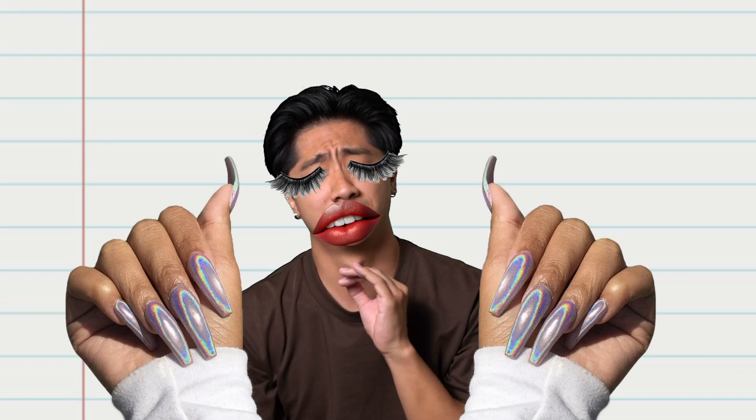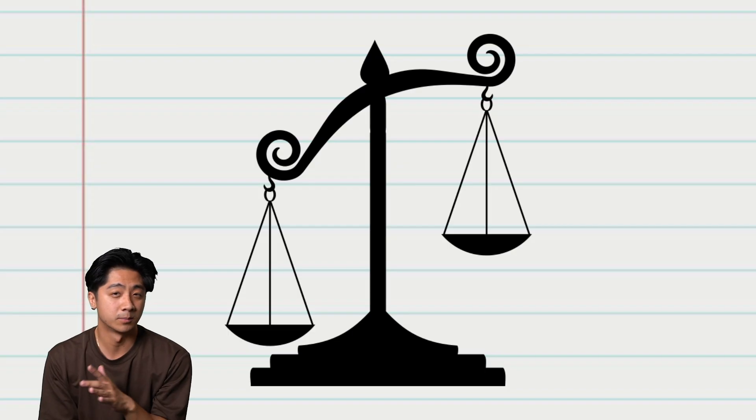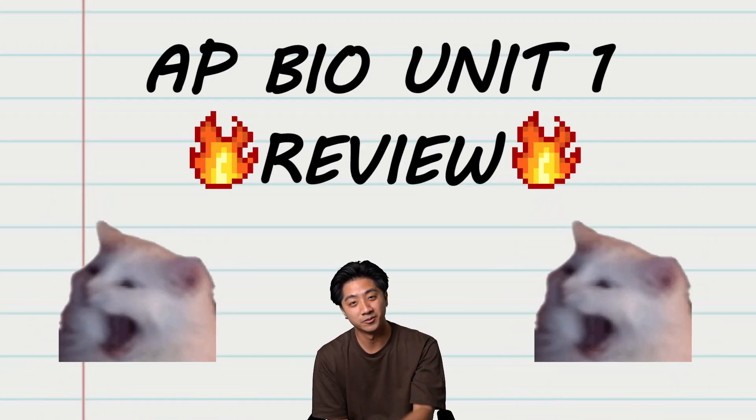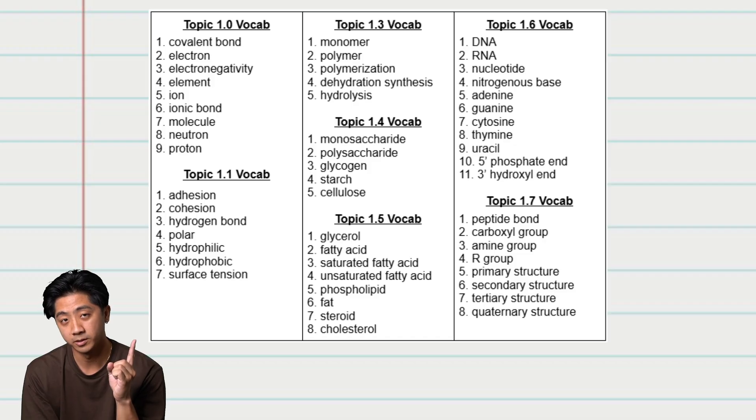Unit 1, the chemistry of life, the first unit of eight long, dreadful, painful units of AP Biology. The unit that will separate the strong from the weak and set the tone for the rest of the class. Hopefully you aren't watching this right before a test. Welcome to the AP Bio Unit 1 review. I'm not here to waste your time or mine. So here's the vocab you'll need for the unit.